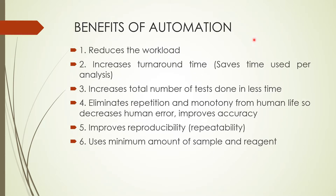What are the benefits of automation? Automation reduces the workload. It increases turnaround time — that means it saves the time invested per analysis. It increases the total number of tests done in less time. It eliminates repetition and monotony, decreases human error, and improves accuracy. It improves reproducibility and uses a minimum amount of sample and reagents.